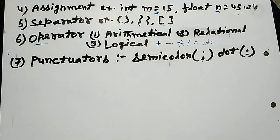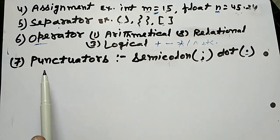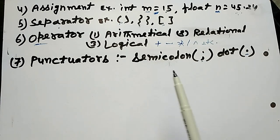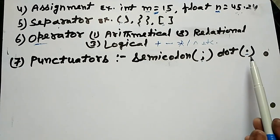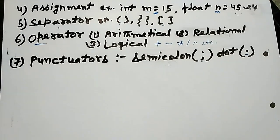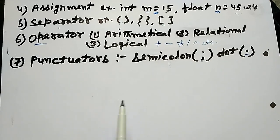Next one is punctuator. Semicolon, dot are the examples of punctuator token. Thank you. Thank you for watching the concept of the data types lecture.